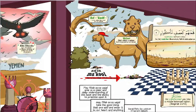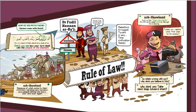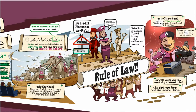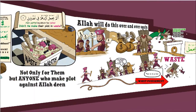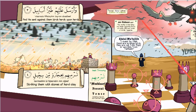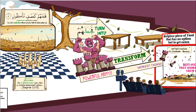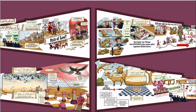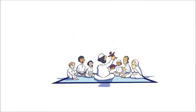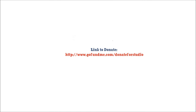بَارَكَ اللَّهُ لِي وَلَكُمْ فِي الْقُرْآنِ الْحَكِيمِ وَنَفَعَنِي وَإِيَّاكُمْ بِالْآيَاتِ وَالذِّكْرِ الْحَكِيمِ وَالسَّلَامُ عَلَيْكُمْ وَرَحْمَةُ اللَّهِ وَبَرَكَاتُهُ. أَعُوذُ بِاللَّهِ مِنَ الشَّيْطَانِ الرَّجِيمِ بِسْمِ اللَّهِ الرَّحْمَنِ الرَّحِيمِ — أَلَمْ تَرَ كَيْفَ فَعَلَ رَبُّكَ بِأَصْحَابِ الْفِيلِ، أَلَمْ يَجْعَلْ كَيْدَهُمْ فِي تَضْلِيلٍ، وَأَرْسَلَ عَلَيْهِمْ طَيْرًا أَبَابِيلَ، تَرْمِيهِمْ بِحِجَارَةٍ مِنْ سِجِّيلٍ، فَجَعَلَهُمْ كَعَصْفٍ مَأْكُولٍ.